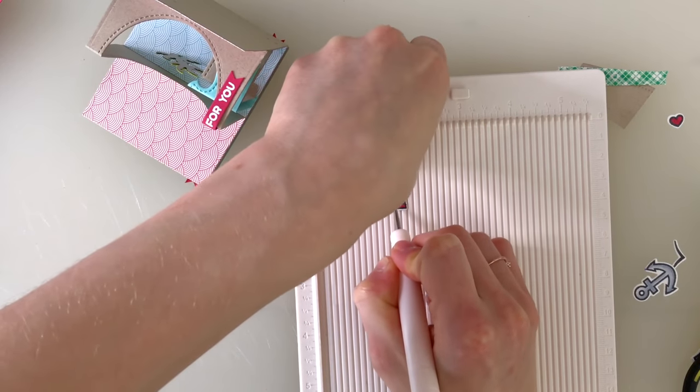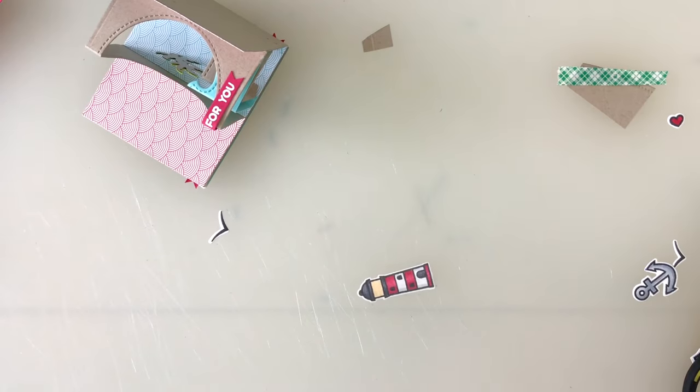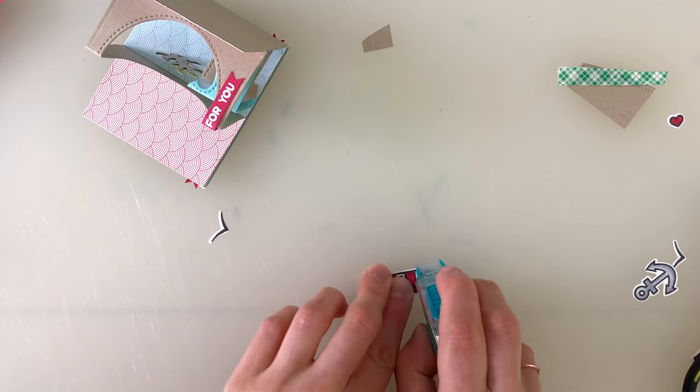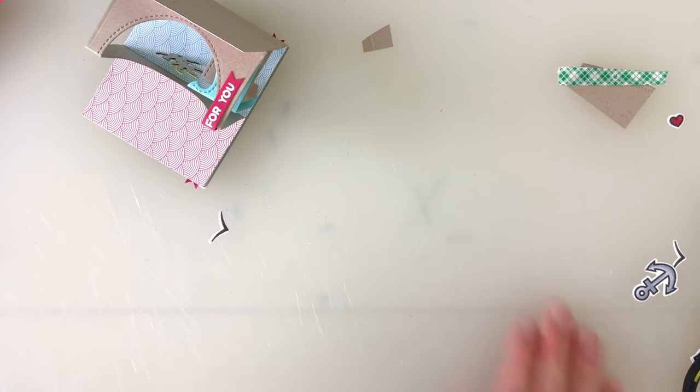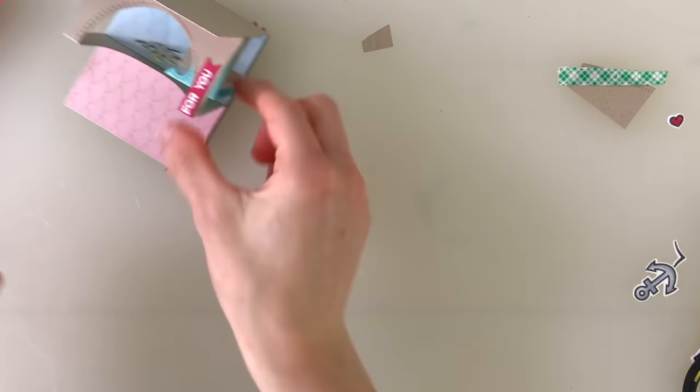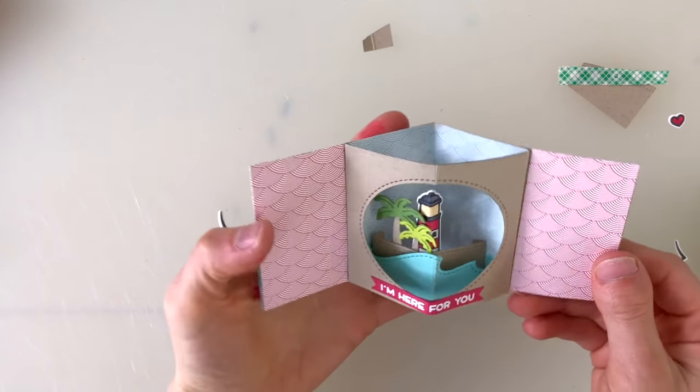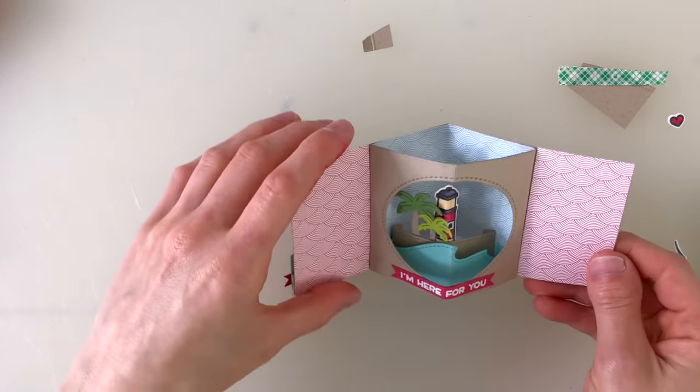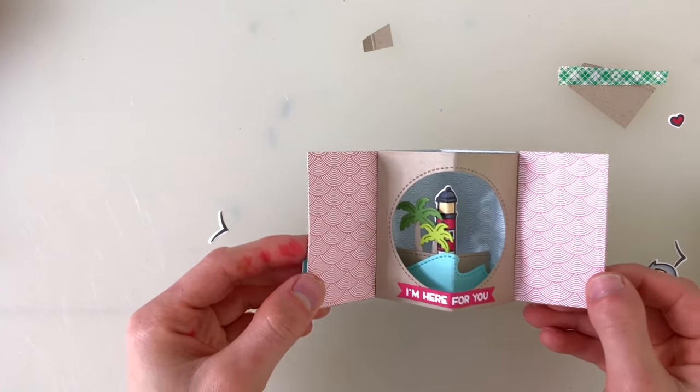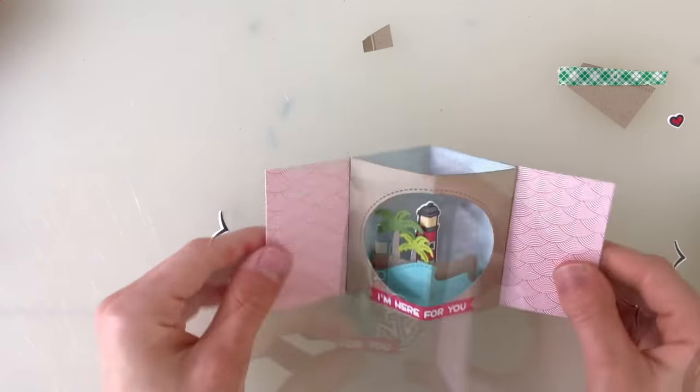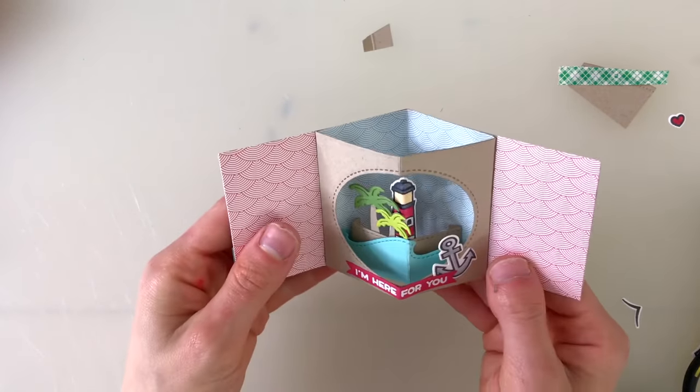I wanted to decorate my card with the smooth sailing stamp set from Lawn Fawn. So one of the ways you can attach your images is to add a score line down the center so you can put it right in the middle of the card. However, if you don't want to do that you could attach it to one of the flat edges of your center picture window panels. I want my lighthouse right in the center so I just created a score line and that lets my lighthouse sit right in the middle of the card and when I close it it's going to fold up really nicely.